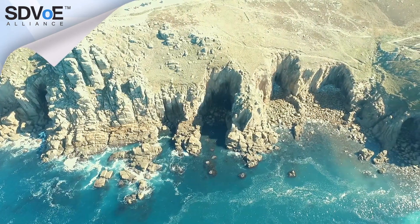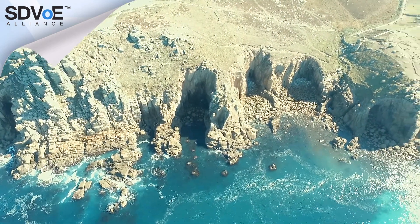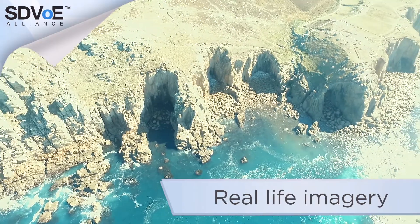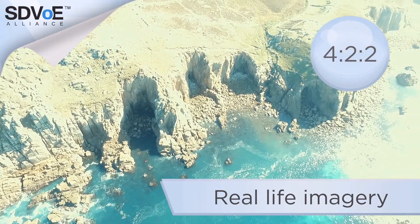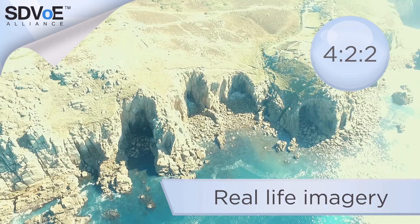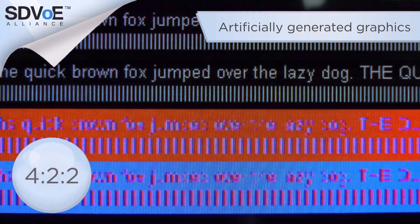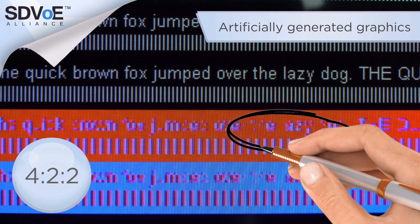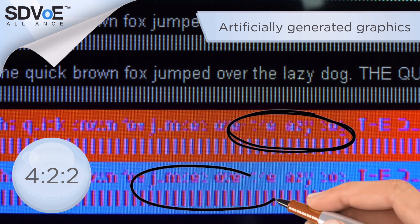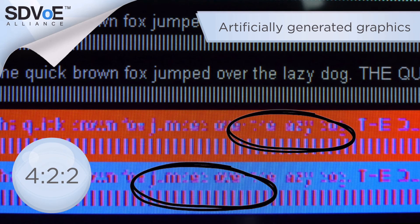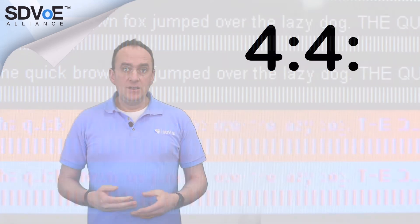Chroma subsampling works very well in many cases involving real-life imagery. A 4:2:2 image could easily be mistaken for its native counterpart, thanks to the sheer volume of different colors moving across the screen at any one time. However, beware, because chroma subsampling could also compromise artificially generated graphics where fewer colors and sharp edges are displayed, like text for example. This compromise can often lead to artifacts and ringing around the edge of objects.